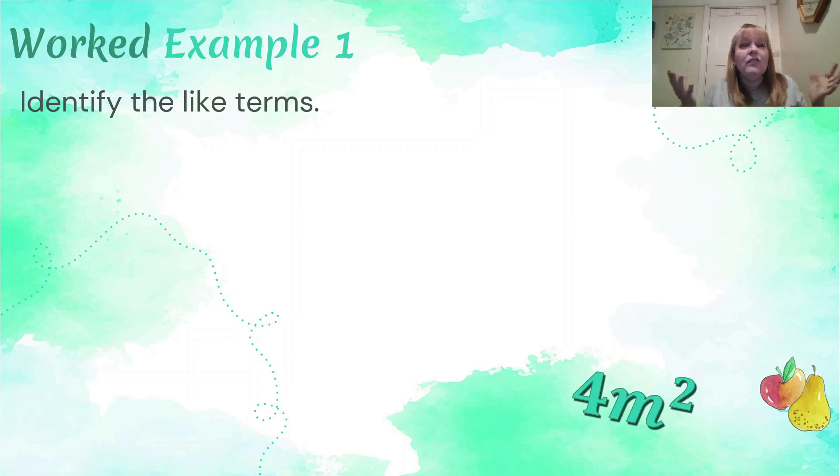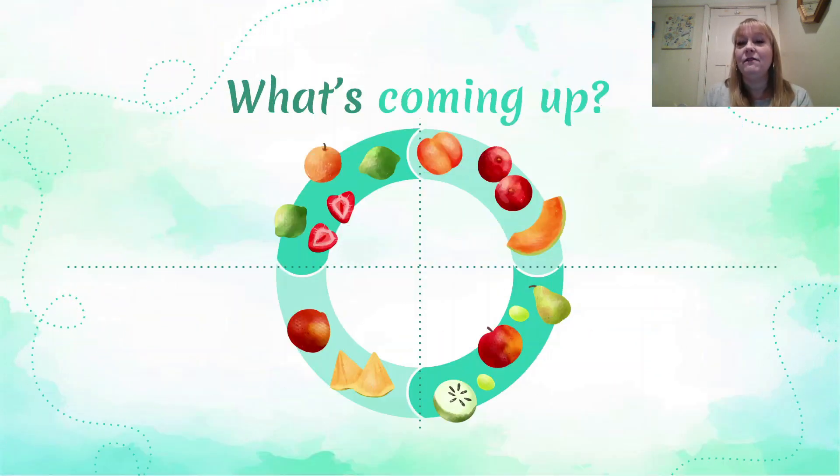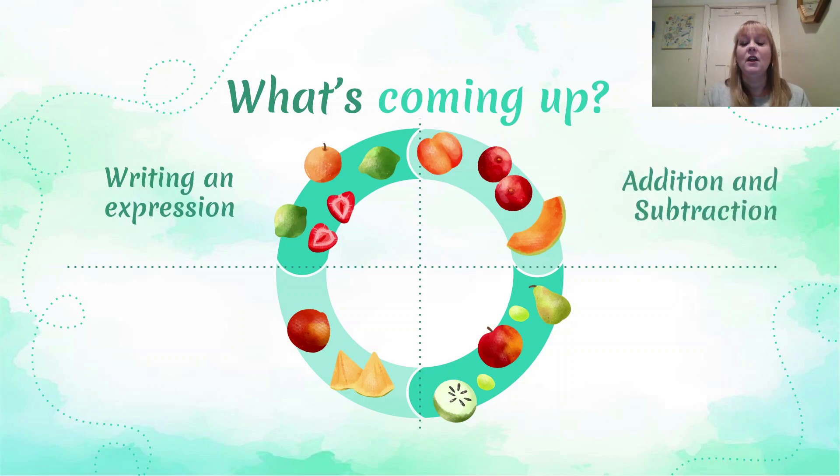Now you might be wondering, why on earth do we want to identify like terms? We're going to find out a lot more about that in our next video. So we're going to be talking about writing expressions using the information we've been given. We're going to look at adding and subtracting like terms, and it's really important that you can identify what a like term is so that you can then add and subtract.